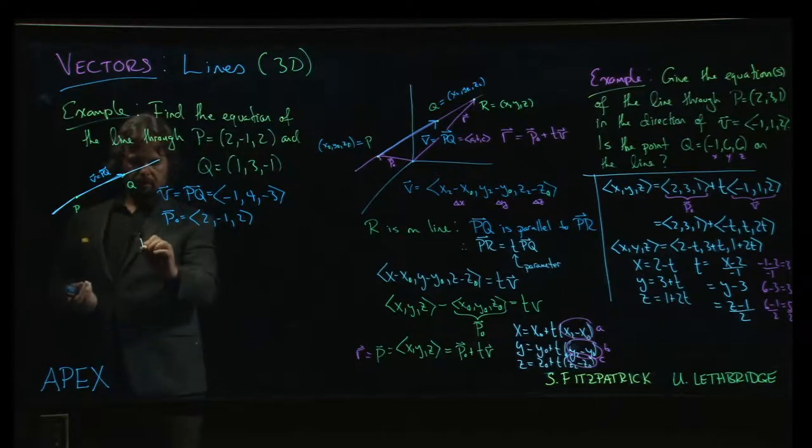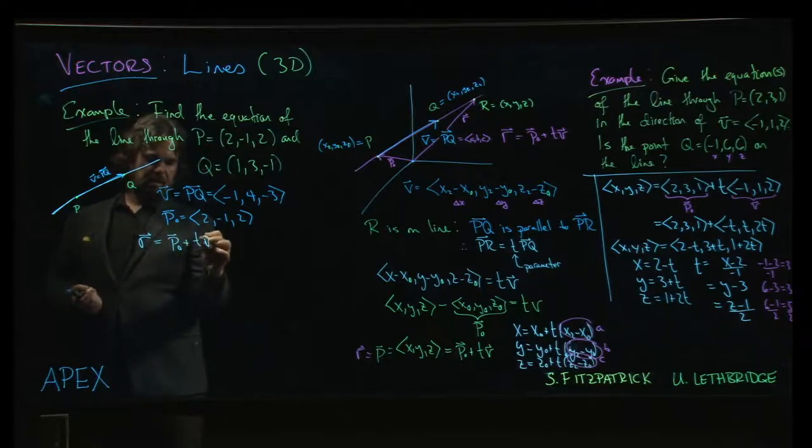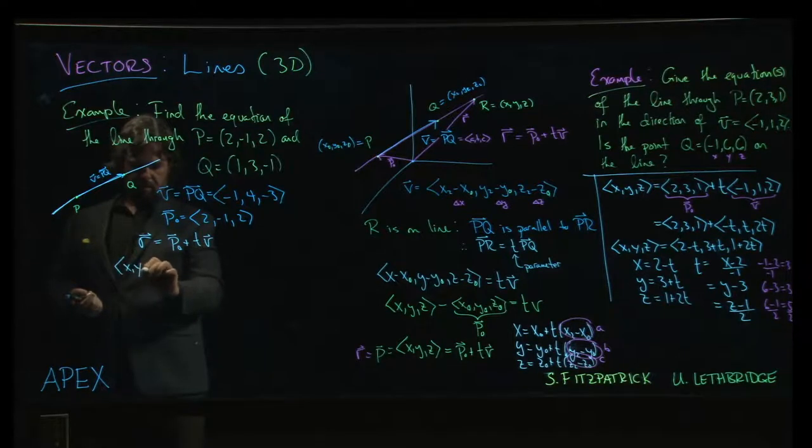And so we get, I'll use r. So r is going to be p0 plus t times v. We can write it like that, and let's actually spell out what that is.